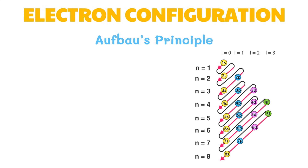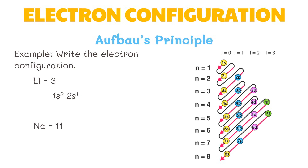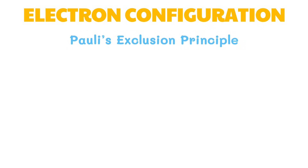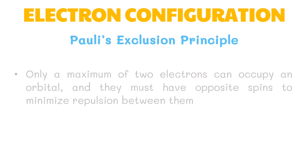Let's try writing the electron configuration for certain elements. Lithium, with three electrons, will have the electron configuration of 1s², 2s¹. Sodium, which has 11 electrons, will have the electron configuration of 1s², 2s², 2p⁶, 3s¹. According to Pauli's exclusion principle, only a maximum of two electrons can occupy an orbital, and they must have opposite spins to minimize repulsion between them.